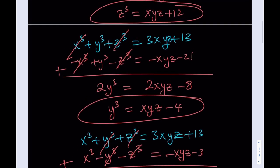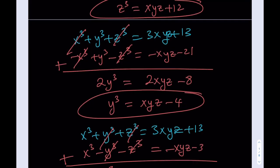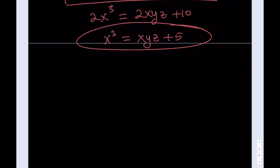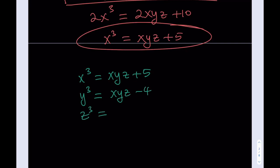Now I've got three equations: x cubed equals xyz plus 5, y cubed equals xyz minus 4, and z cubed equals xyz plus 12. We have a new system, which is different from the original one but derived from it. What's really nice about this system — and this is the surprise part — is that we have x cubed, y cubed, z cubed, and also xyz. One method would be to isolate xyz and set them equal to each other.